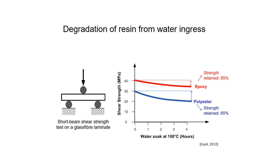One of the main problems for wind turbine blades is the degradation of resin from water ingress. The absorption of water affects the resin and the resin-fiber interface, leading to gradual reduction of mechanical properties. The strength of the epoxy fibers is retained up to 85%, and polymer up to 65% only, after soaking in water at 100°C.